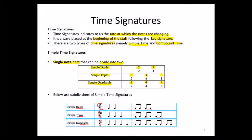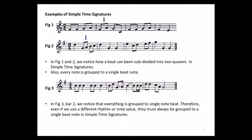Then we have simple quadruple time. Remember, quadruple means four. There are four crotchet beats — one, two, three, four — which can be subdivided into four groups of two quavers each. These are the examples of simple time signatures.